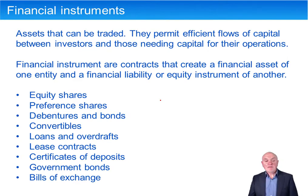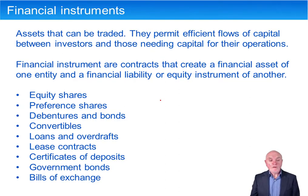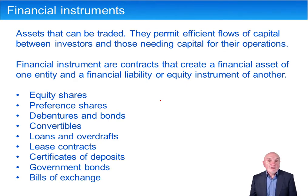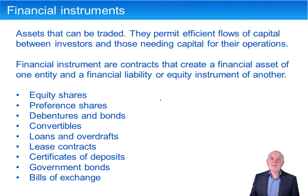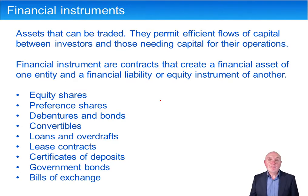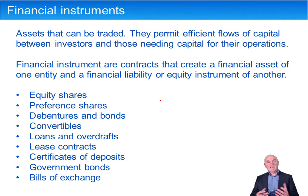Financial instruments are simply assets that can be traded. They allow the efficient flow of resources between investors and people who need investment money. Essentially, they're contracts — they create a financial asset in one entity, the investor, and a financial liability in another entity, essentially the borrower. Here's a list of the typical sorts of financial instruments.